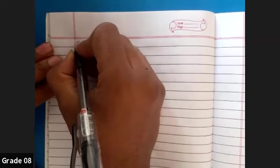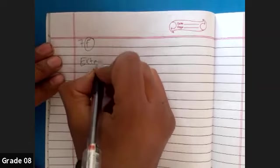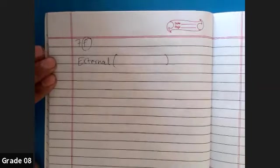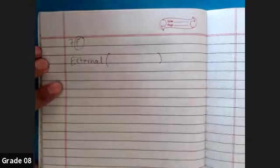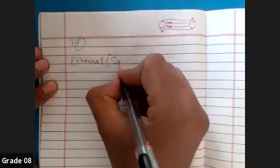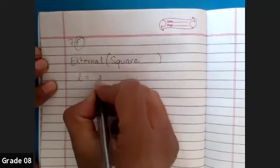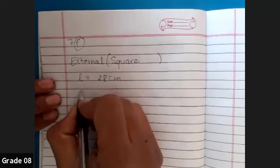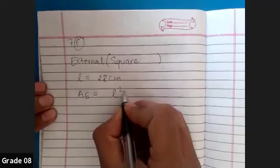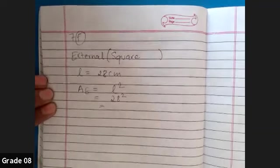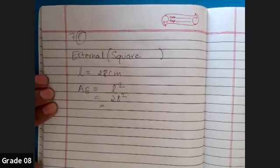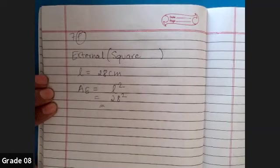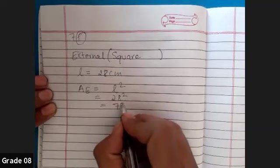So first I'm going to write the external part of the solution. The external part in the question is a square. The length given was 28 centimeters, so we simply find the area of the square using the formula L squared. That is 28 squared, and 28 into 28 gives us 784 centimeter square. So the external area is 784 cm².